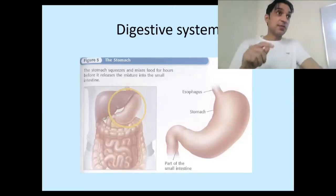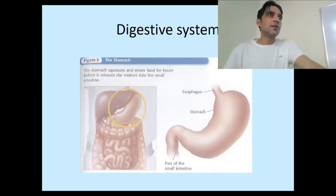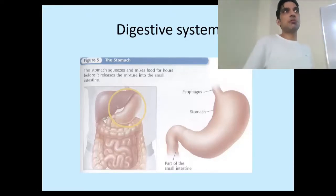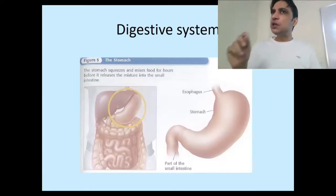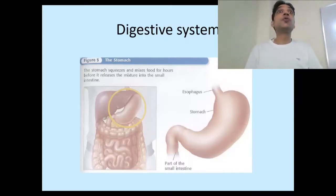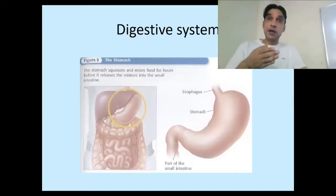Here's an interesting question: pepsin is a protein-digesting enzyme, but our stomach is also made up of protein. So the pepsin produced inside the stomach might eat our own stomach as well. We need something to protect the stomach from the action of the gastric juice and the chemicals produced by the stomach.